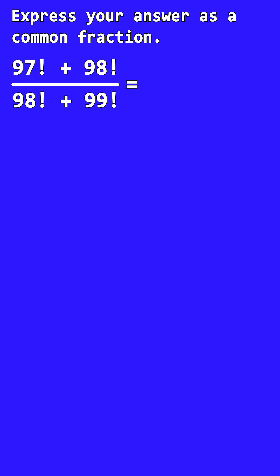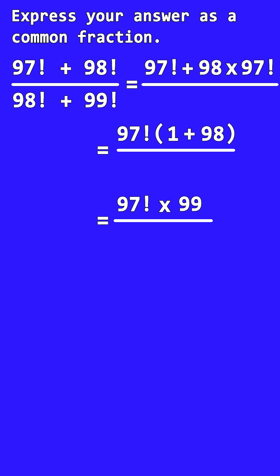In our question, the numerator has 97! and 98!. We can write 98! as 98 × 97!. Factoring out 97!, we get 97!(1 + 98), which equals 97! × 99.